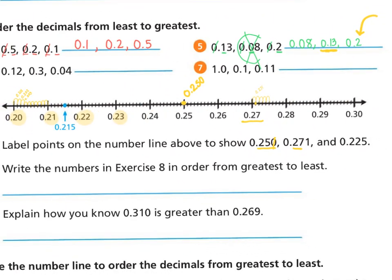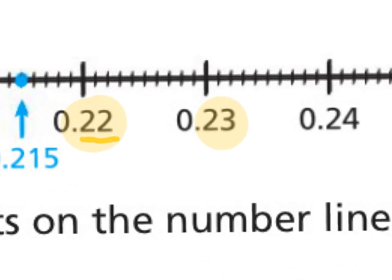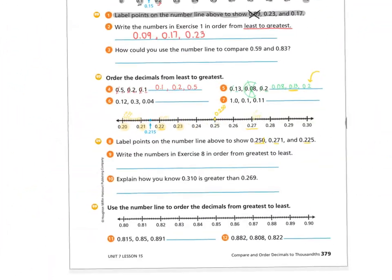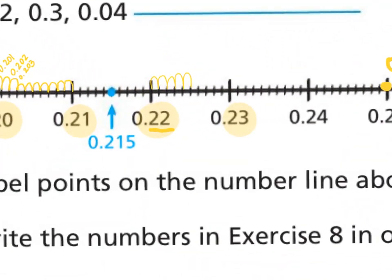My last one is 225 thousandths. Just like last time, I'm going to look at 22 on my number line and find it. Then I start counting: 220, 221, 222, 223, 224, 225. I think that's what I'm looking for — 225? Yep, good thing I checked. There I am — zero and 225 thousandths.